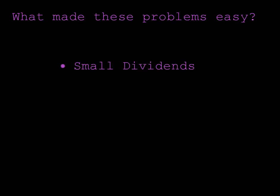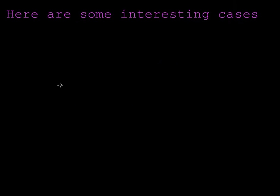So let's look at what made these problems easy. First of all, there were small dividends, and it's always easy to divide small numbers. But more importantly, there were small divisors. Dividing by 2, 3, 4, and 5 is easy because we know the times tables pretty well. And also, since the numbers are small, it's easier to find the leftovers.